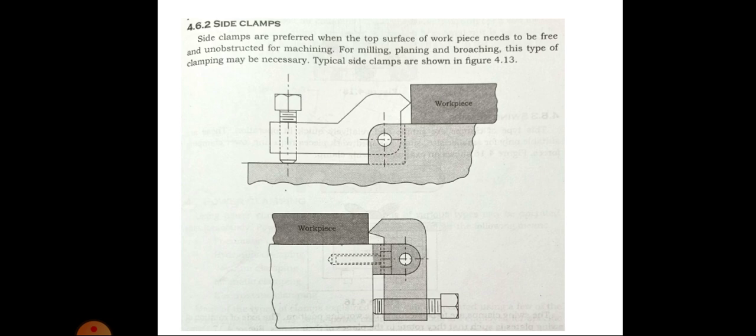The diagram shows a simple side clamp. By tightening the nut, the wedge shaped clamp presses the workpiece against the locating surface and keeps it in position.